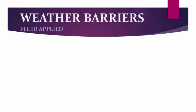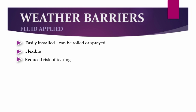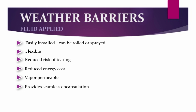The first weather barrier option we will discuss is fluid-applied weather barriers. These are very easy to install and can be rolled or sprayed. They are very flexible, have a reduced risk of tearing, and become one with the substrate. They may also help reduce energy costs, as some are an air barrier as well as a weather barrier. Most are vapor permeable — check with your manufacturer before specifying. Fluid-applied weather barriers provide seamless encapsulation, so improper lapping of sheet goods is not an issue.